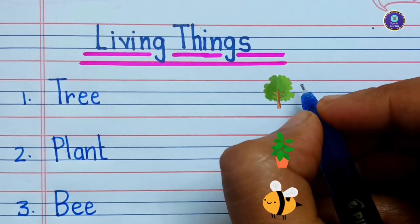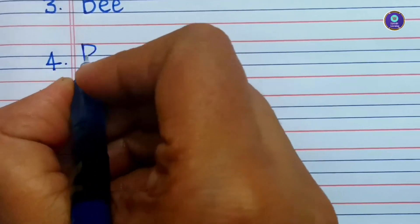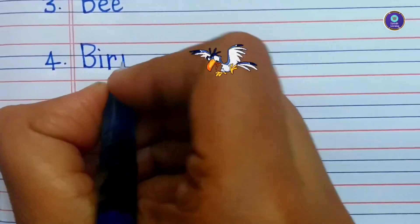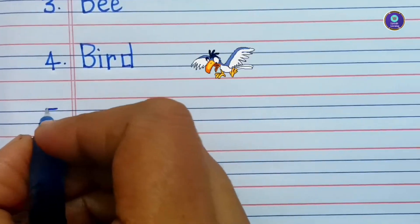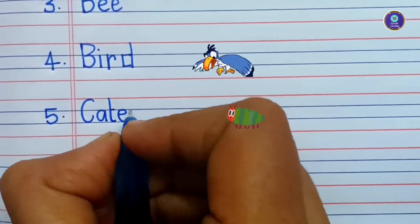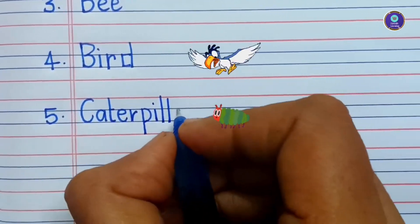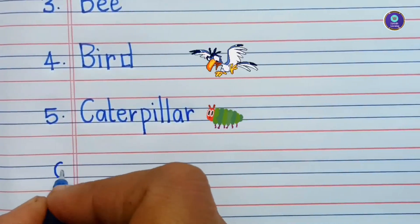Fourth one is bird. B-I-R-D, bird. Fifth one is caterpillar. C-A-T-E-R-P-I-L-L-A-R, caterpillar.